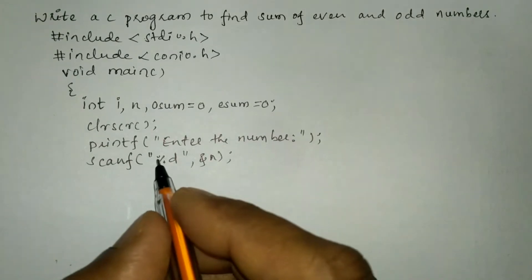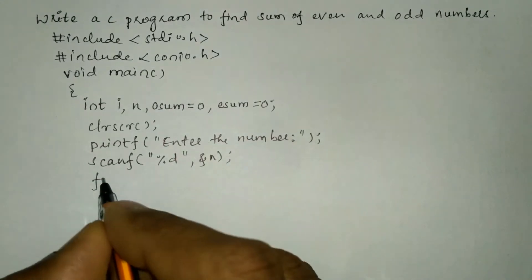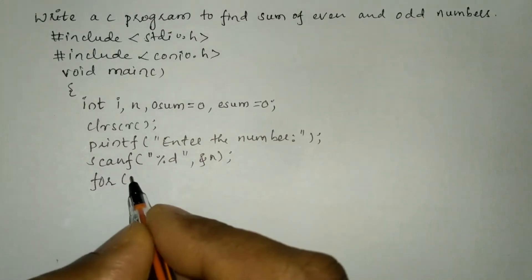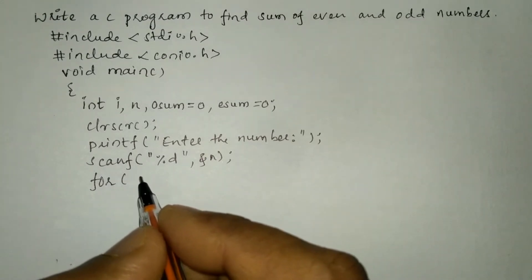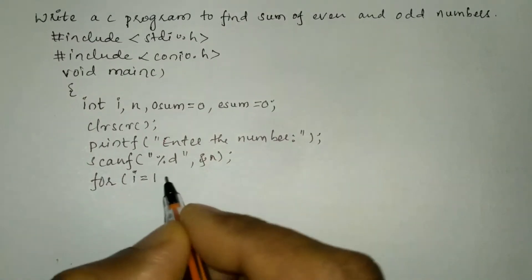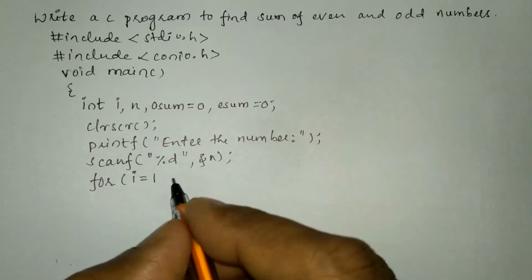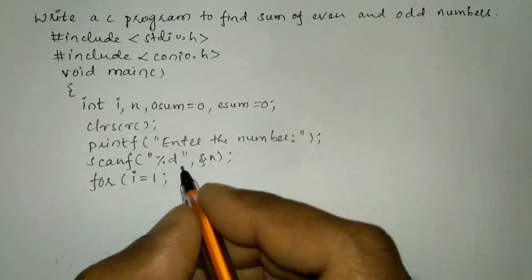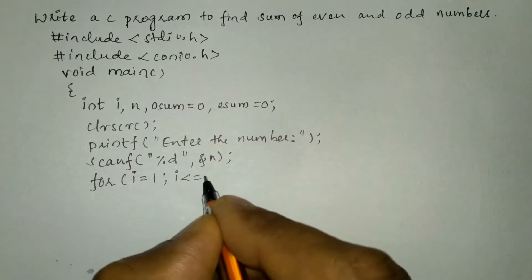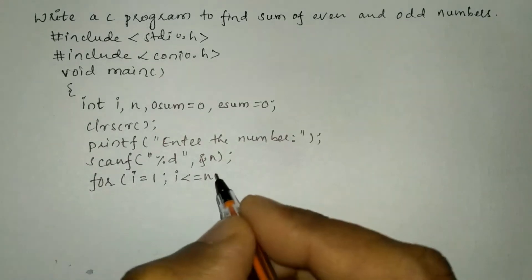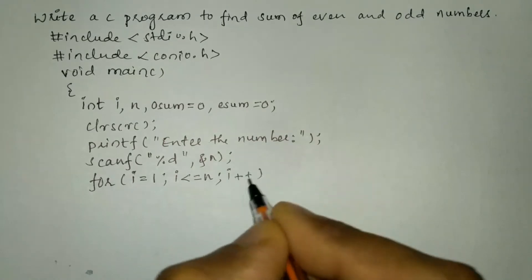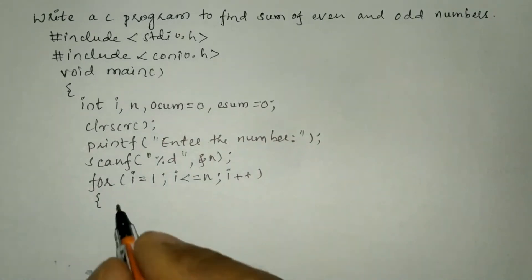Now let us take a for loop structure because we want to find the sum of natural even and odd numbers. I will write i = 1 because natural numbers start from 1. It has to iterate up to n, so the condition is i <= n, with semicolon, and i++ followed by a curly open brace.